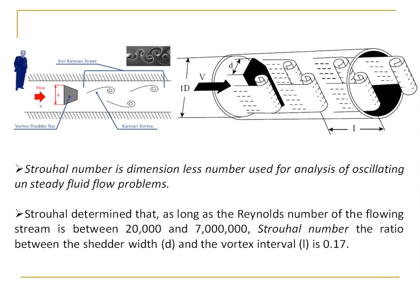Strouhal determined that as long as the Reynolds number — which is also a dimensionless number giving the relationship between pipe diameter, flow velocity, and viscosity, and indicates whether flow is laminar or turbulent — is in the range of approximately 20,000 to 20,000,000, which is mainly turbulent flow, the Strouhal number is 0.17.